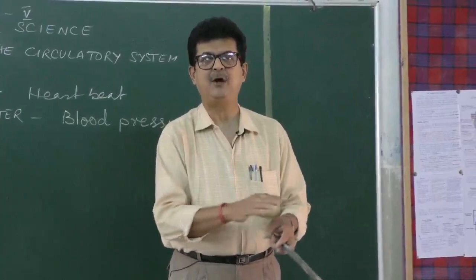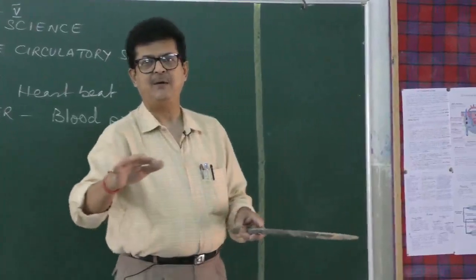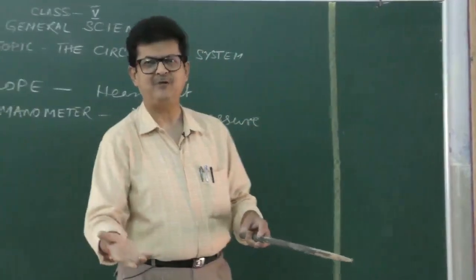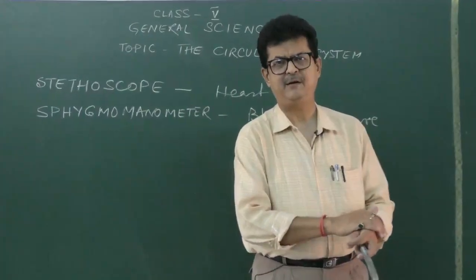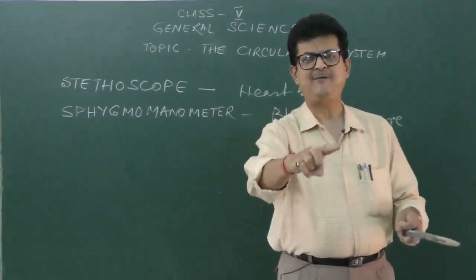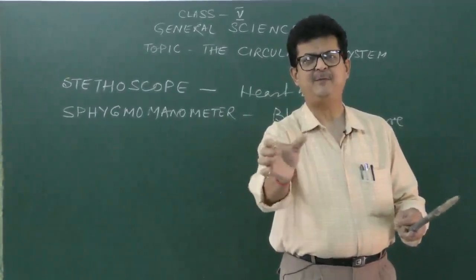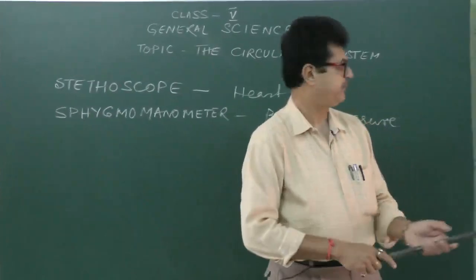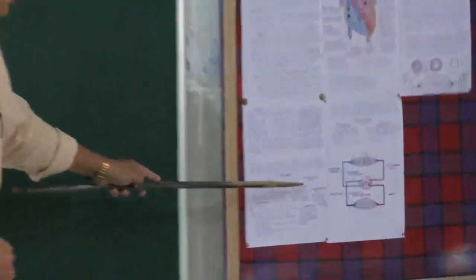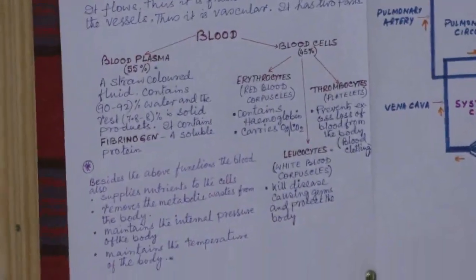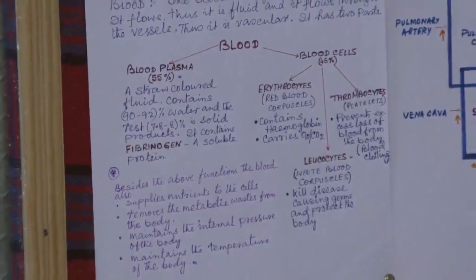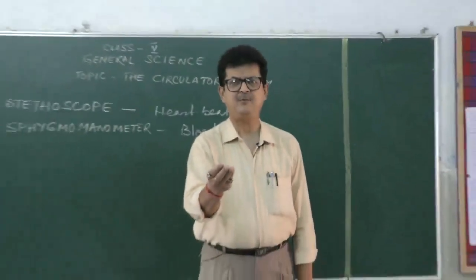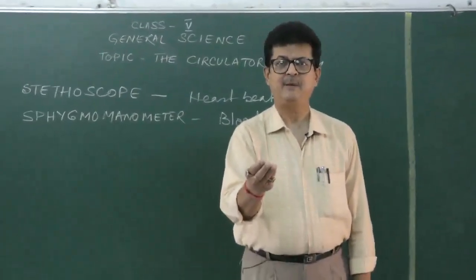Normally a male has about 5 to 5.5 liters of blood and a female has about 4.5 to 5 liters of blood — this is the range of blood present in the body. So these cells together perform many functions: RBCs — red blood cells — are meant for the carriage of oxygen; WBCs are for protection; and thrombocytes — platelets — are for blood clotting.